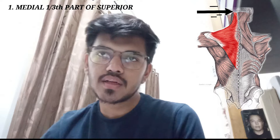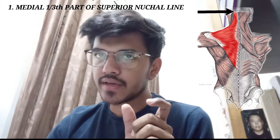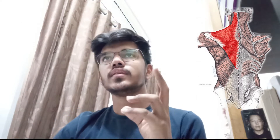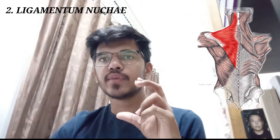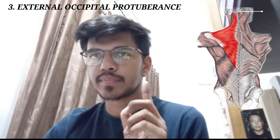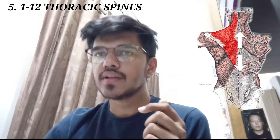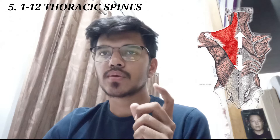Talking about the origin, it is divided into five parts. The first is the medial one third part of the superior nuchal line, then the ligamentum nuchae, and also the external occipital protuberance, C7 spine, and T1 to T12 spines.